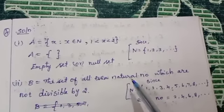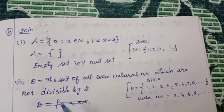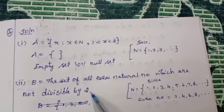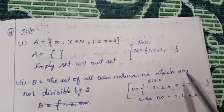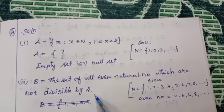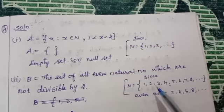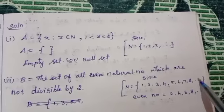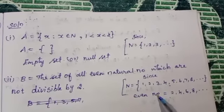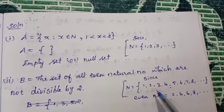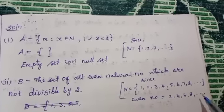B is equal to set of all even natural numbers which are not divisible by 2. Natural numbers start from 1. From natural numbers, even natural numbers are 2, 4, 6, 8, 10, etc.